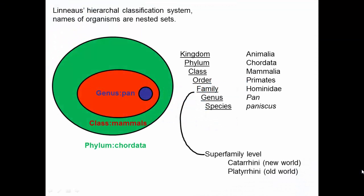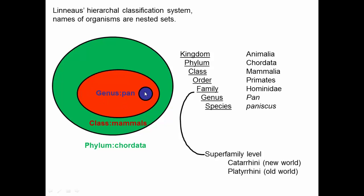Let's talk about phylogenetics and classification. If we think about Linnaeus's hierarchical classification system — his binomial nomenclature — he gave names to organisms arranged as nested sets. For example, there would be a phylum called Chordata, and within that phylum there were a bunch of other classes, one of which is mammals. Within classes would be a bunch of different genera, one of which is Pan.